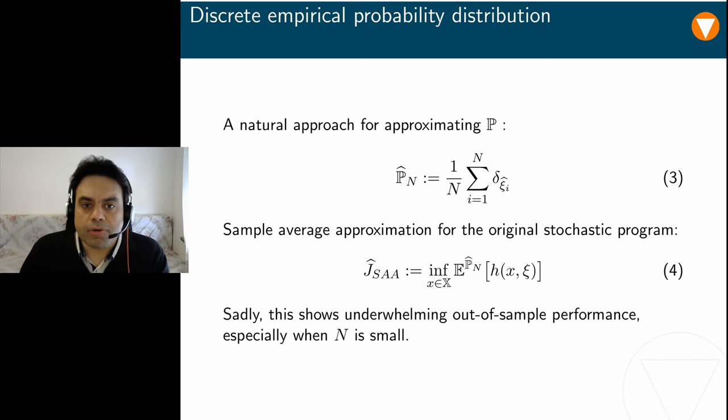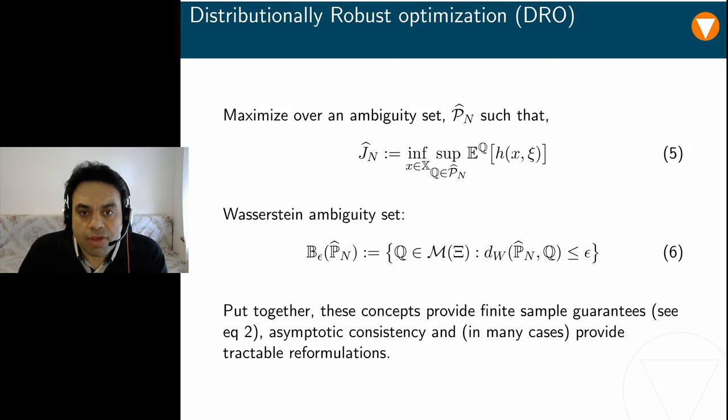The SAA problem has been conceived primarily for situations where the distribution P is known and additional samples can be acquired cheaply via random number generation. However, the optimal solutions of the SAA problem tend to display a poor out-of-sample performance in situation where n is small and where the acquisition of additional samples would be costly or impossible. This motivates us to propose an alternative approach that explicitly accounts for our ignorance of the true data-generating distribution P.